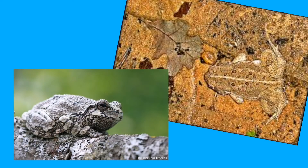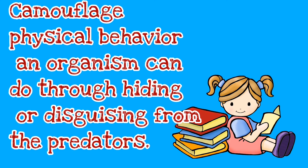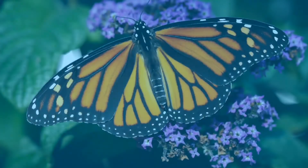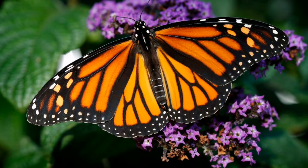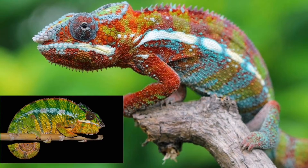A toad has the ability to blend in with its surroundings, and it is what we call camouflage. Camouflage is a physical behavior an animal can do when hiding or disguising from the predators. The combination of bright orange and black on a monarch butterfly is an adaptation to warn potential predators that the butterfly is poisonous and prevent it from being eaten. Adaptations afford the organism a better chance to survive in its surroundings.